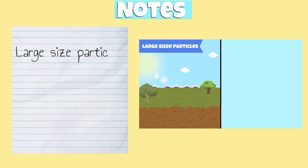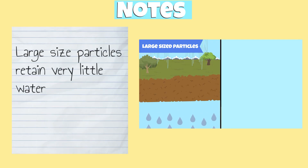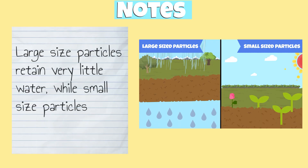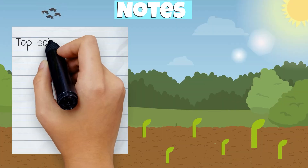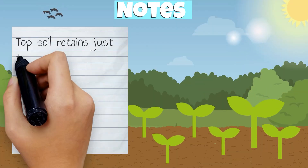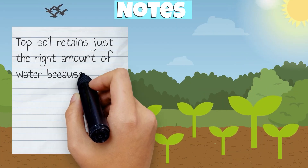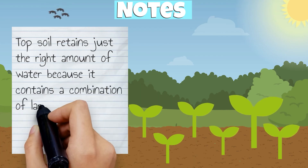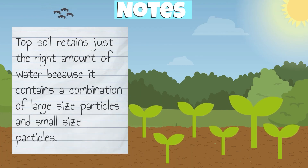Large-sized particles retain very little water, while small-sized particles retain too much water. Topsoil retains just the right amount of water because it contains a combination of large-sized particles and small-sized particles.